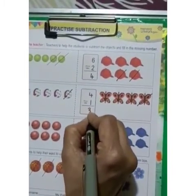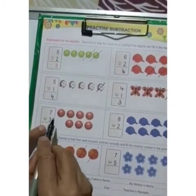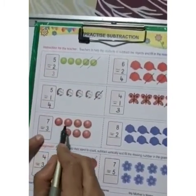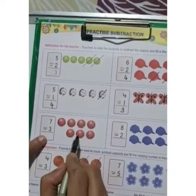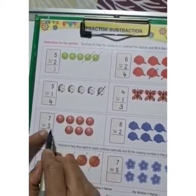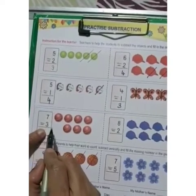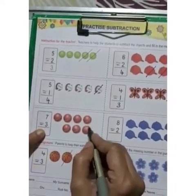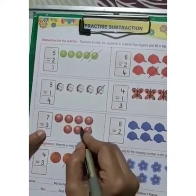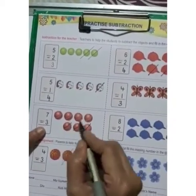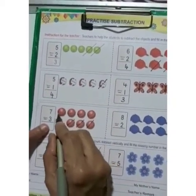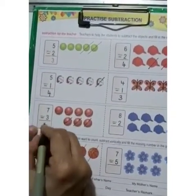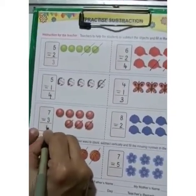Here there are 7 balls — 5, 6, 7. You have to take out 3. Cross 3 balls: 1, 2, 3. How many remain? 1, 2, 3, 4. So, 7 minus 3 gives you 4.